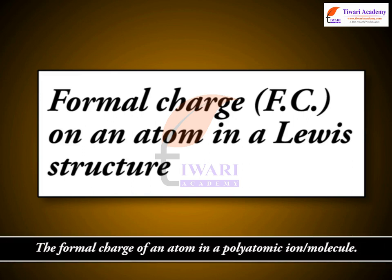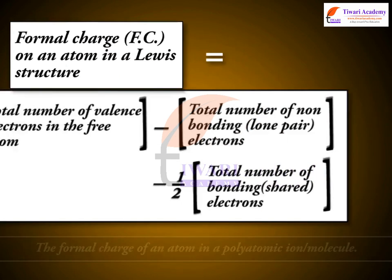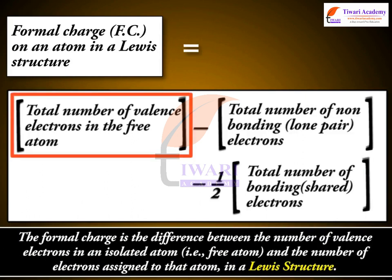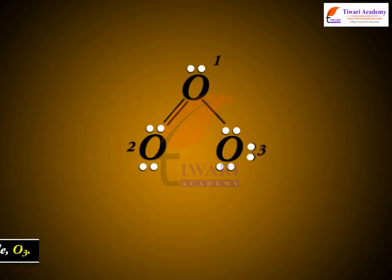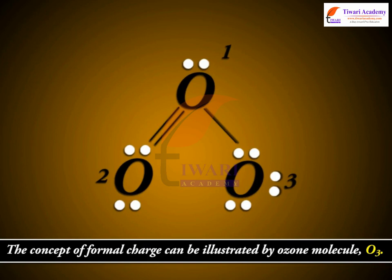The formal charge of an atom in a polyatomic ion molecule is defined as the difference between the number of valence electrons in an isolated atom, i.e., free atom, and the number of electrons assigned to that atom in a Lewis structure. The counting being based on the assumption that the atom in the molecule owns one electron of each shared pair and both the electrons of a lone pair. The concept of formal charge can be illustrated by ozone molecule O3.